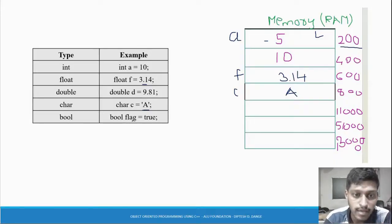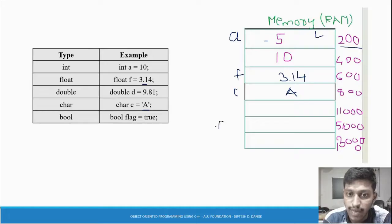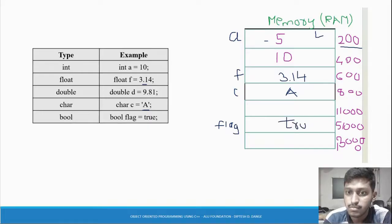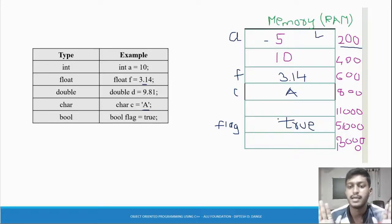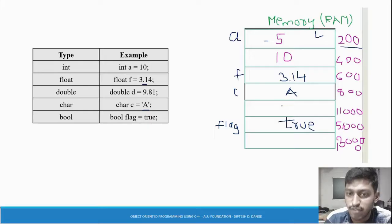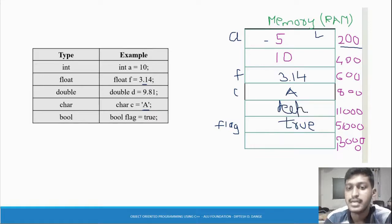Boolean - 'flag' is equal to true. Here 'flag' is a name given to the memory location. Assume memory location 510000 is named 'flag', and it stores the value 'true' - T, R, U, E. This is of boolean type. And string means a collection of alphabets, like D, W, P, D. So that is what a string is.